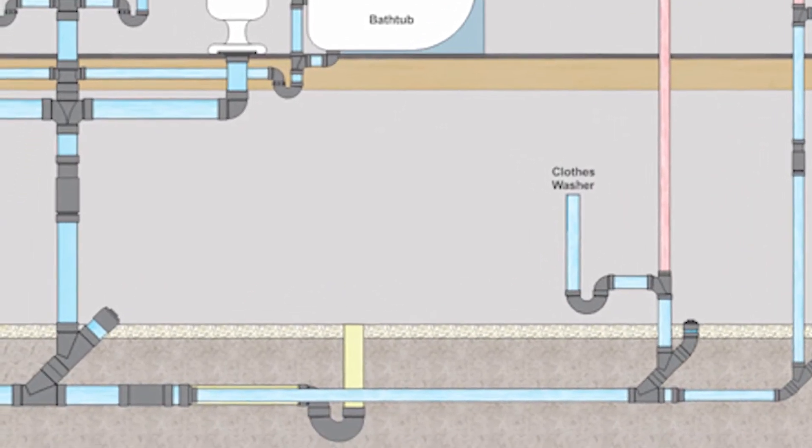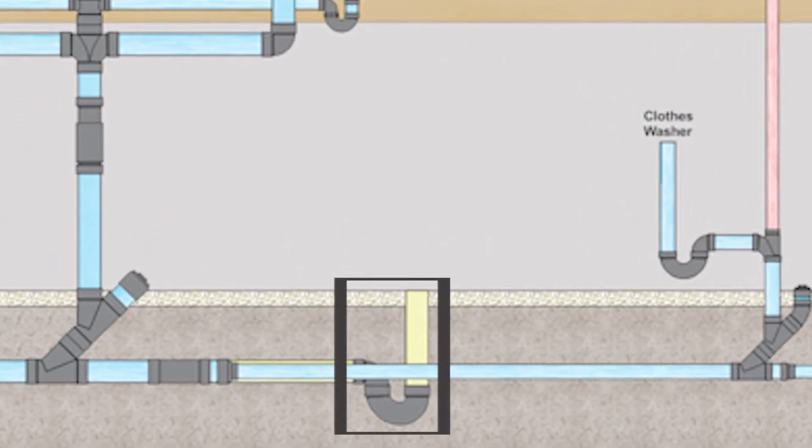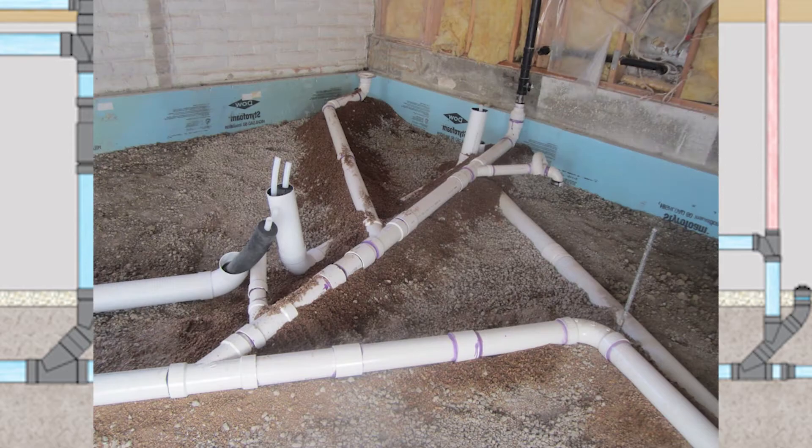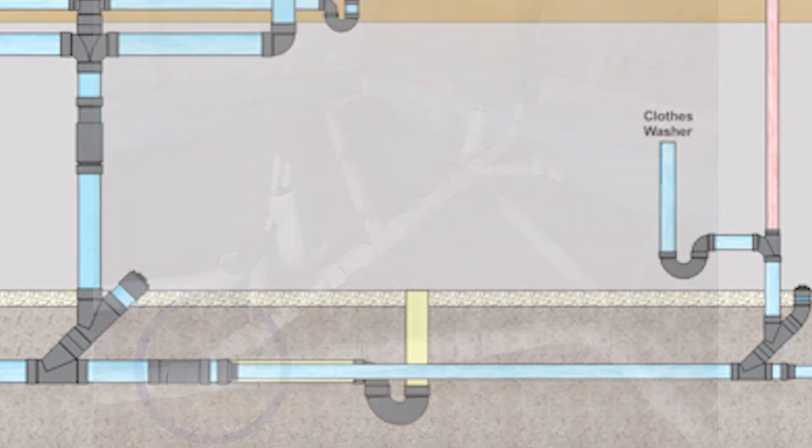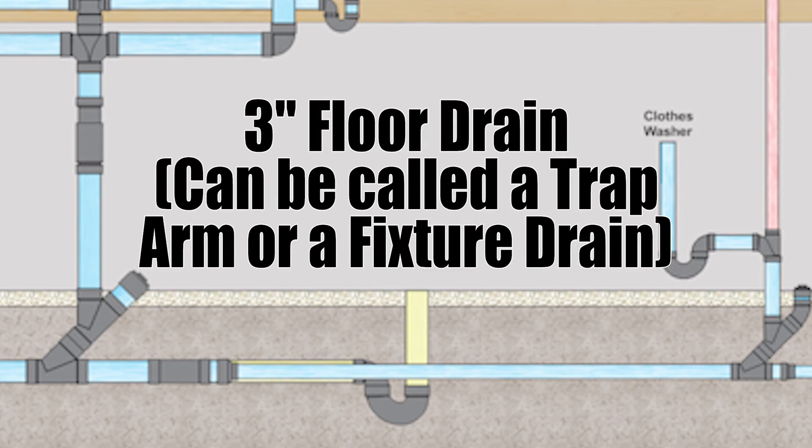Now the hardest fixture to see here is the floor drain that's in the middle of the basement there. It is drawn really funny because I'm using a two-dimensional drawing. So what we actually have there is a Y sitting on its side and some fittings that we can't see connecting that up. So that floor drain is actually in behind that branch pipe. Due to some code requirements that floor drain would need to be three inches in size in this particular installation.